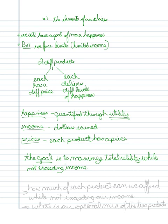And so, what we do in this chapter with this understanding is, how much of each product can we afford while not exceeding our income.